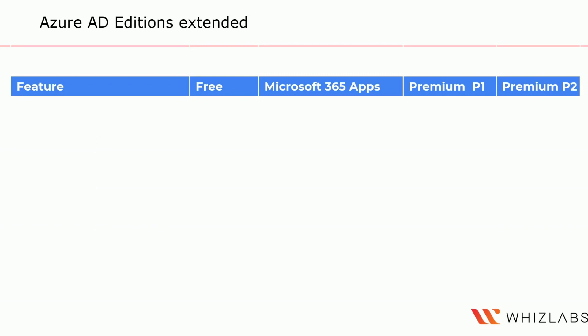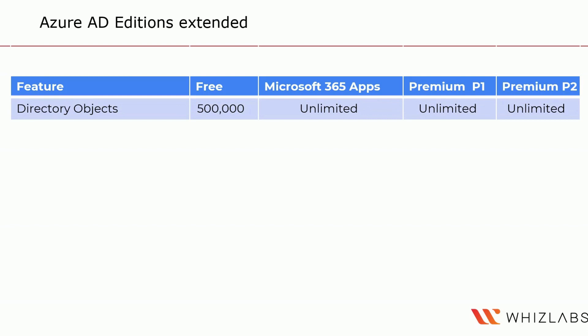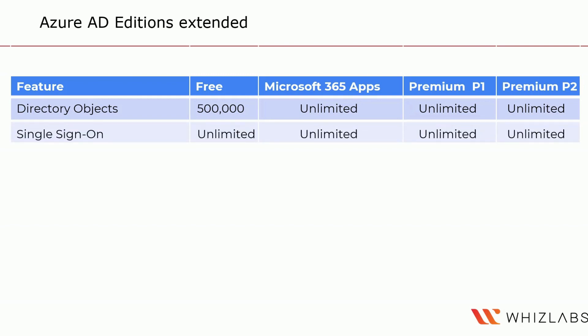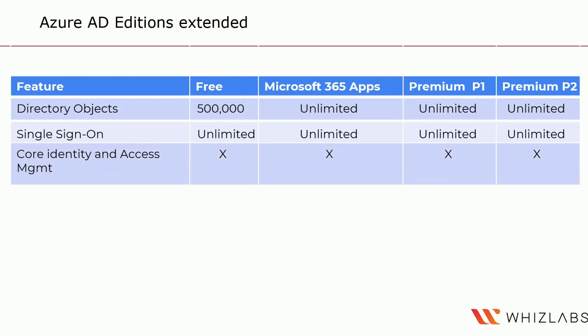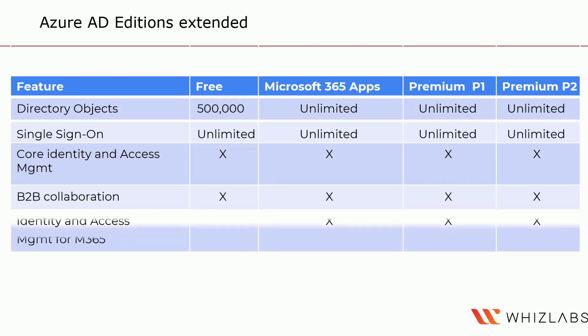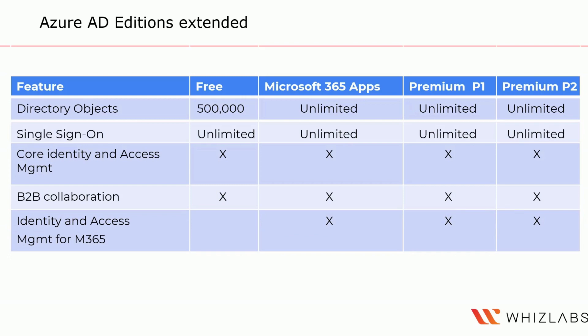Let's extend our previous conversation about the difference between Azure AD editions. There are four different types of licenses available, with more features available in higher versions. Starting with directory objects: at the free version you're looking at a maximum of 500,000, while Microsoft 365 Apps, Premium P1, and P2 are all unlimited. Single sign-on allows unlimited for every version. Core Identity and Access Management features and B2B collaboration are available across all editions. For Identity and Access Management, the free version starts to fall away, so you need a minimum of the Microsoft 365 Apps Azure Active Directory version.